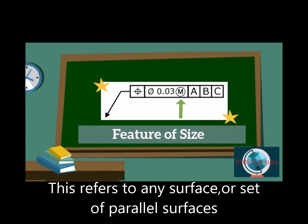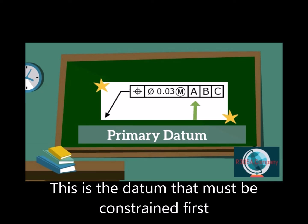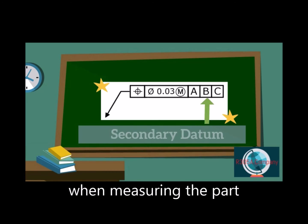This refers to any surface or set of parallel surfaces associated with a size dimension. This is a datum that must be constrained first when measuring the part.